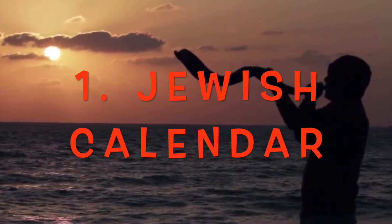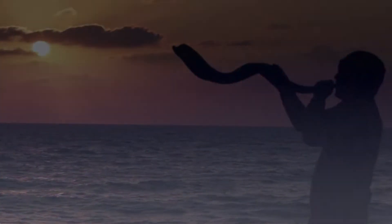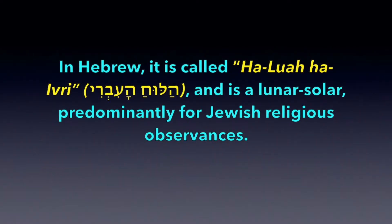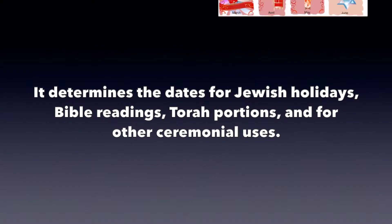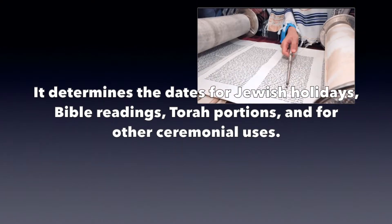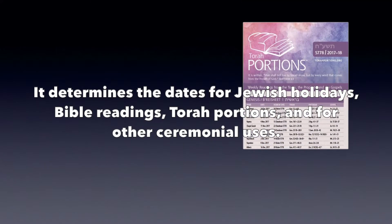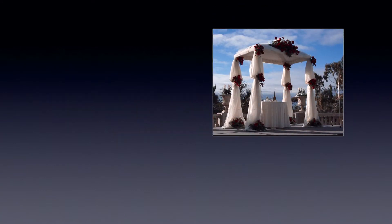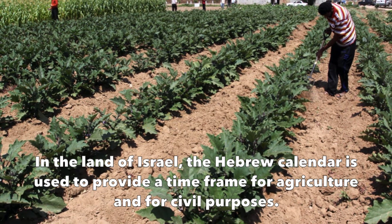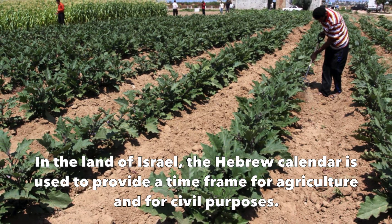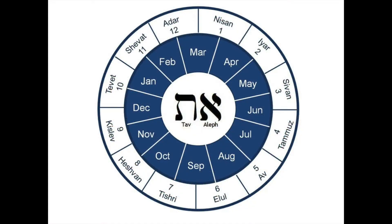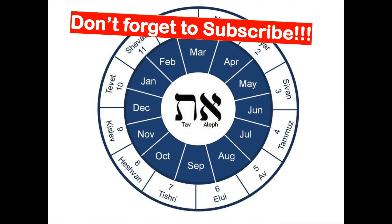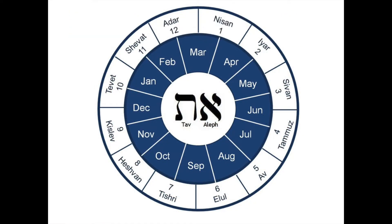Let's start with the Jewish calendar. In Hebrew it is called HaLuach HaIvri, and is a lunar-solar calendar used predominantly for Jewish religious observances. It determines the dates for Jewish holidays, Bible readings, Torah portions, and for other ceremonial uses. In the land of Israel, the Hebrew calendar is also used for agriculture and civil purposes. The present Jewish calendar is the product of evolution, including a Babylonian influence.